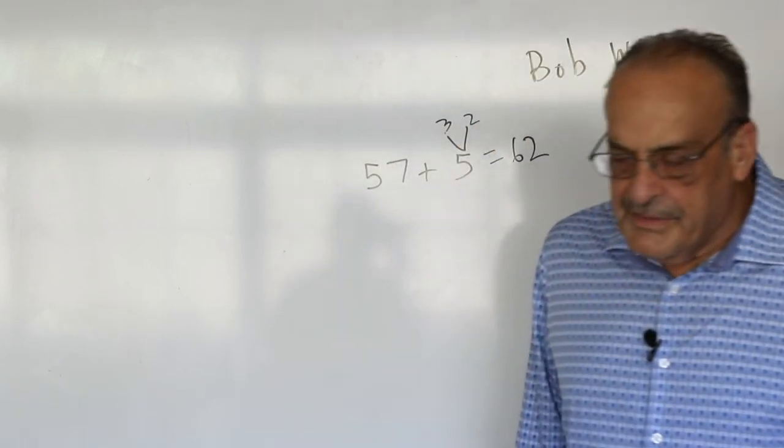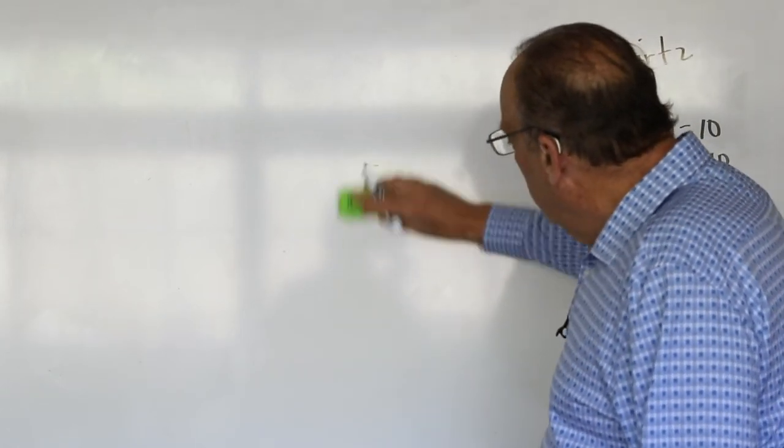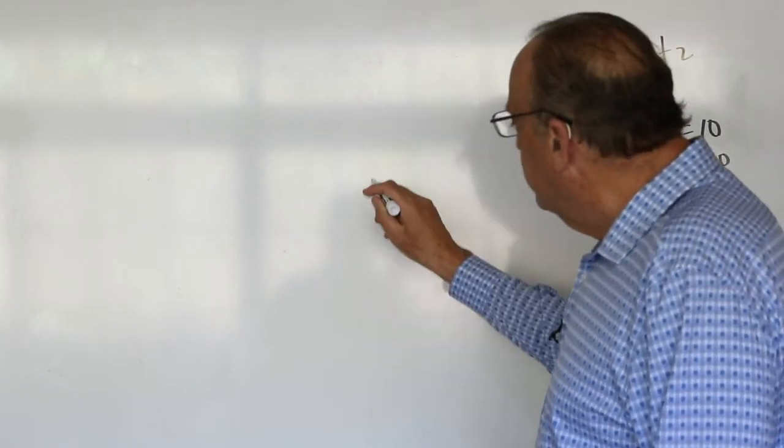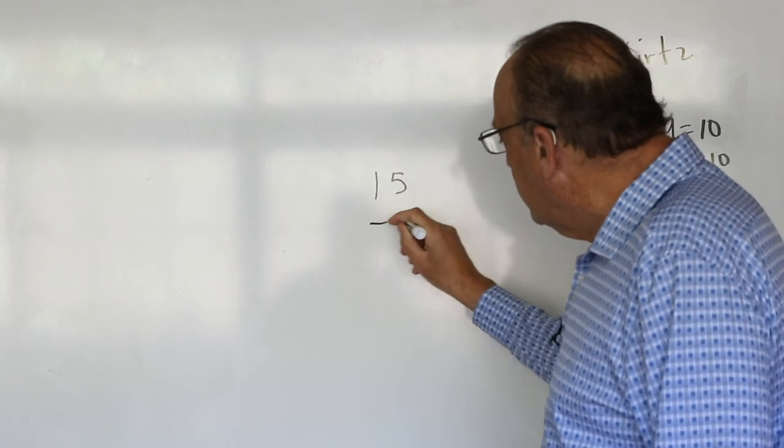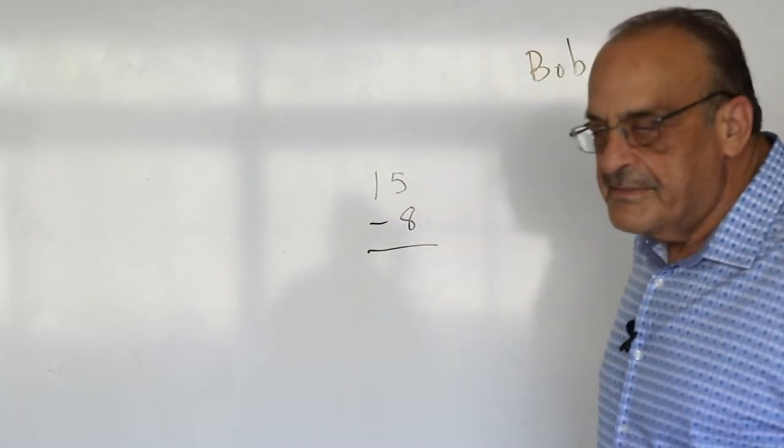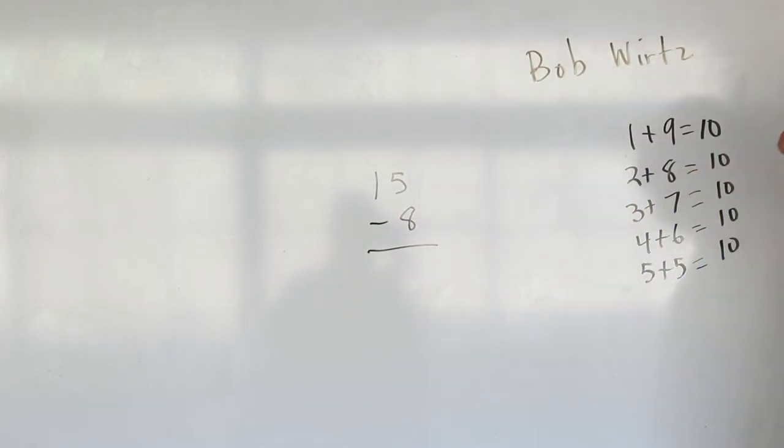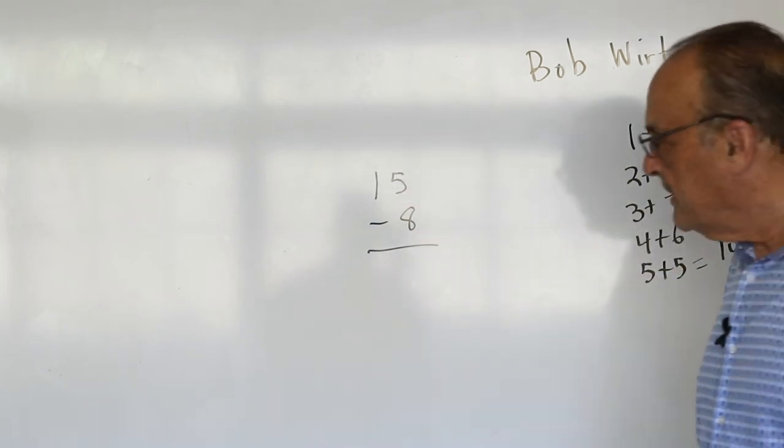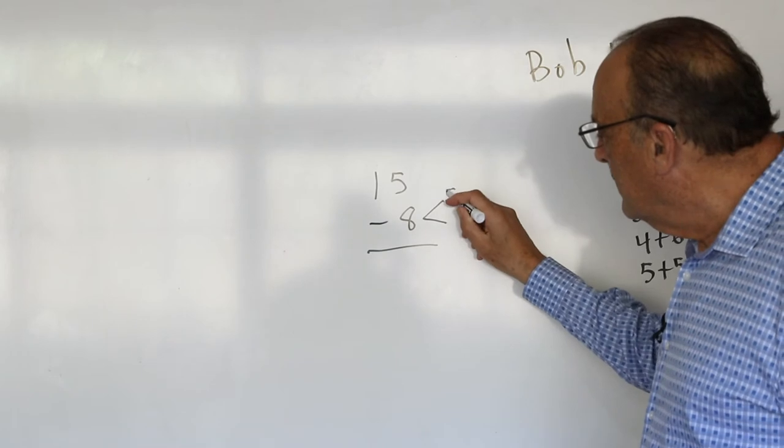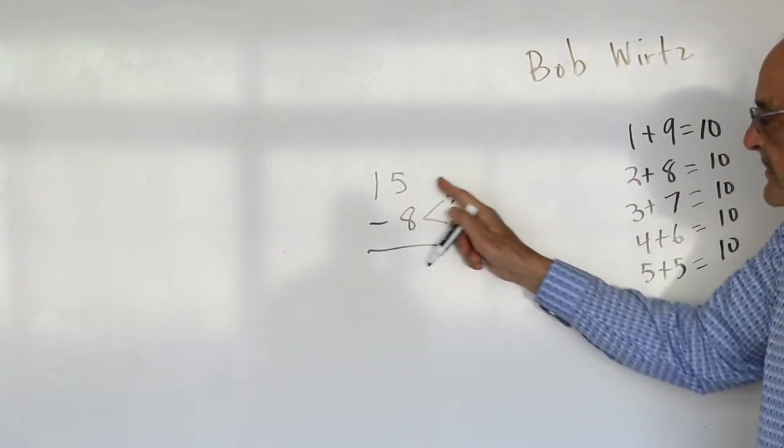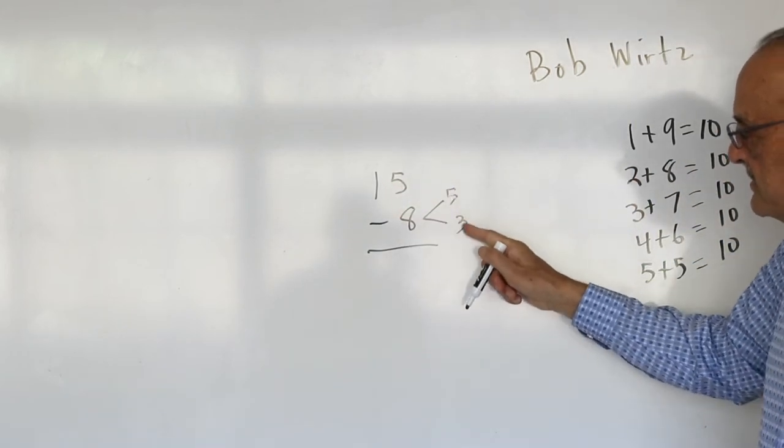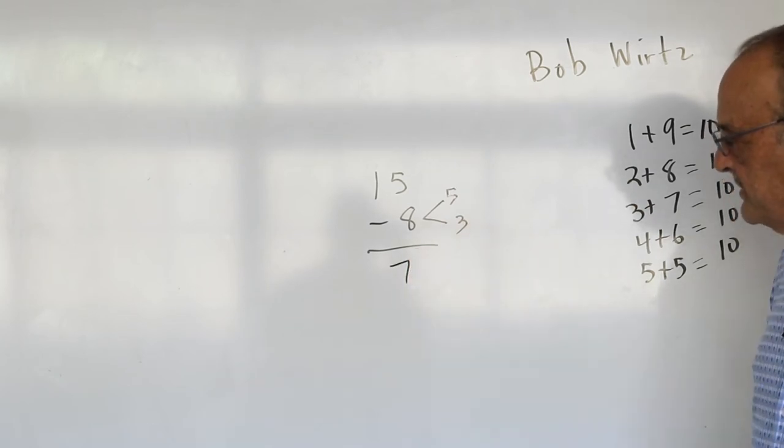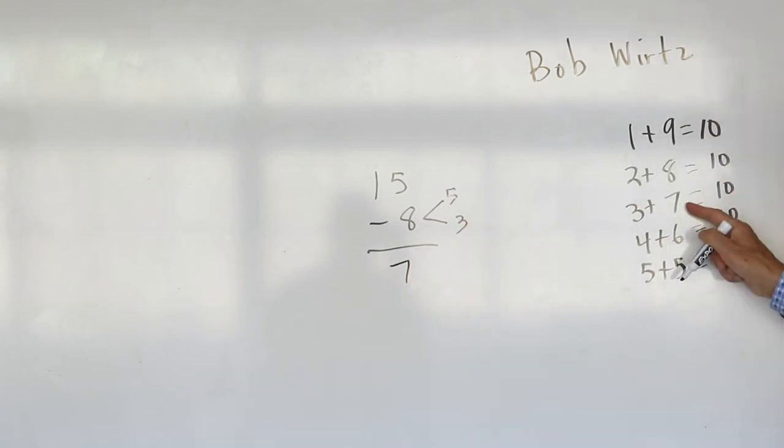Now, going back to what I started the video clip with, if we look at this problem 15 take away 8, I don't make them say the whole sentence with no visual aids. I start with this. So they say 15 minus 5 is 10, and 10 minus 3 is 7. So basically all they've got to do is remember that 7 is 3's partner.